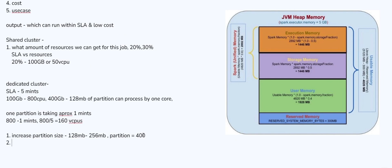The next thing is to understand whether it is a memory-oriented job or a CPU/compute-oriented job — two types of jobs are available. If it is memory-oriented, we will try to assign more memory to the job, and if it is compute-oriented, we have to throw more cores at the job. You can increase the partition size from 128 MB to 256 MB or even 512 MB depending on your job and data size. This helps you choose which type of instances to use for your job.